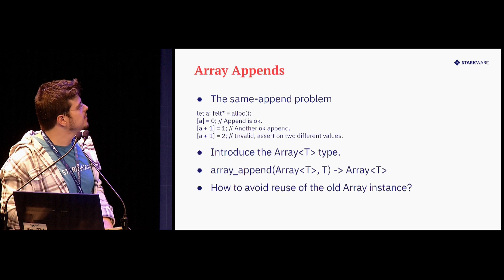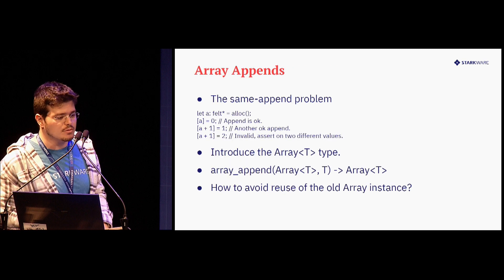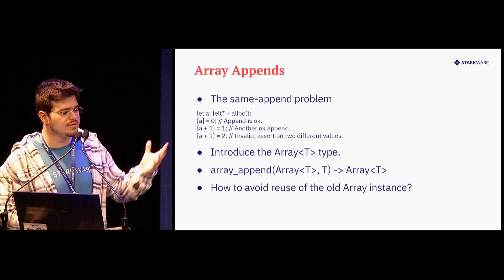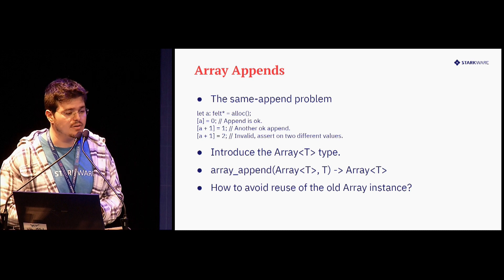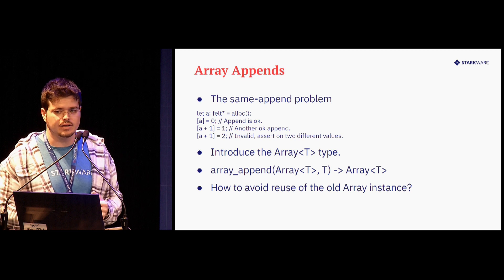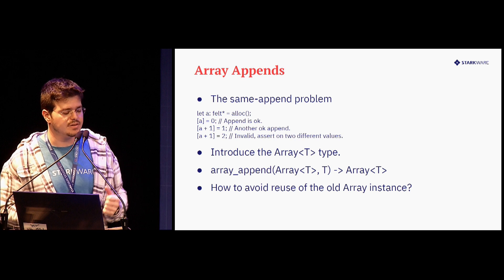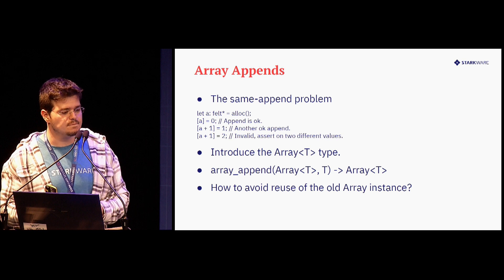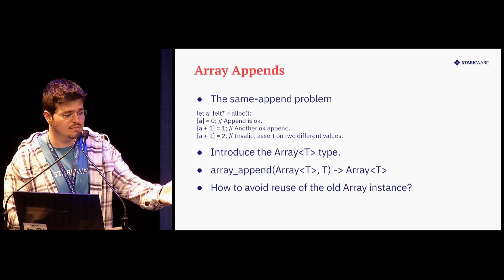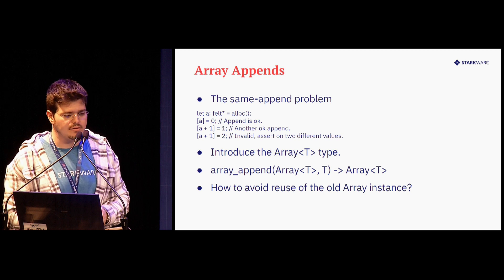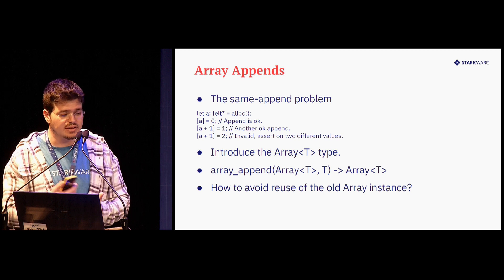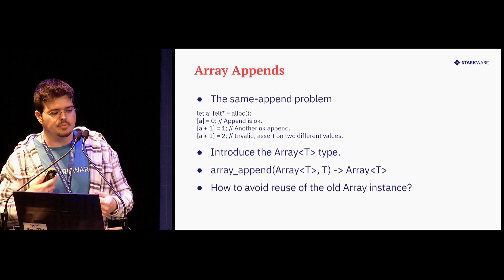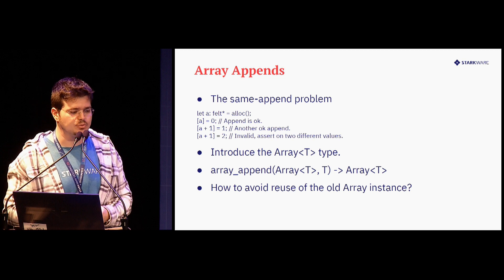Okay, so now what about the array append issue? As I mentioned before, this is an example of the same append array problem. In Cairo 0, let's say I have array A allocated. I try to do a first append of the value zero — that's good. I append again to A plus one with value one — that's good. And now I try to append to the same address A plus one again — this is invalid.